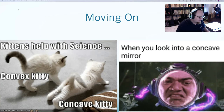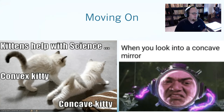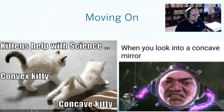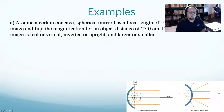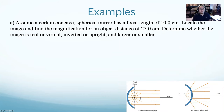Where we left off, I had talked about diagrams and doing problems with curved mirrors. We're going to pick up today by solving some problems with curved mirrors before we get into lenses. So we're going to jump straight into a problem. Assume a certain concave spherical mirror has a focal length of 10 centimeters. Locate the image and find the magnification. The object distance is 25 centimeters. Determine if it's real or virtual, inverted or upright, larger or smaller.